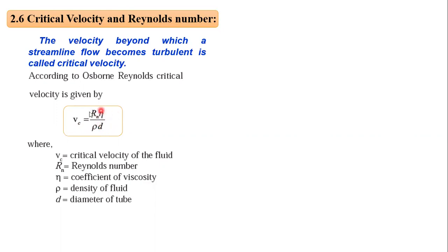This is the formula observed by scientist Renault. Reynolds number can be written as R_n = (v_c × ρ × d) / η, where v_c is critical velocity, ρ is density, d is diameter of the tube, and η is coefficient of viscosity.